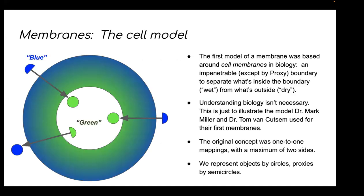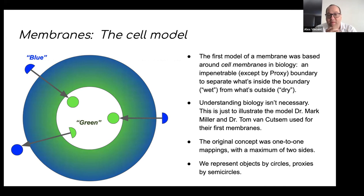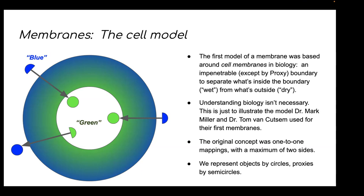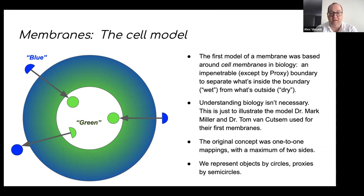When it comes to membranes — and apologies, this is reiterating some things that haven't been presented to TC39 in quite some time — the first model of membranes that Mark and Dr. Tom Van Cutzen came up with was of a cell membrane, hence where the name came from. You're either inside the membrane or outside it. You can have proxies on the outside pointing to values inside, or pass objects through the membrane to craft proxies on the inside. Objects are circles, proxies are semicircles.